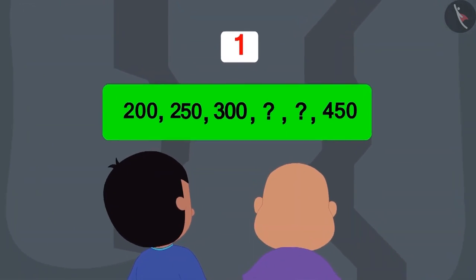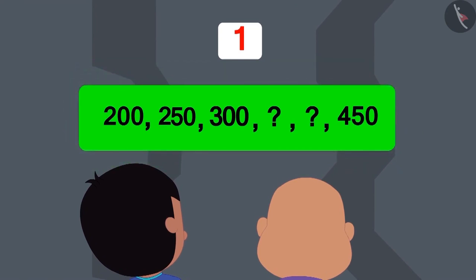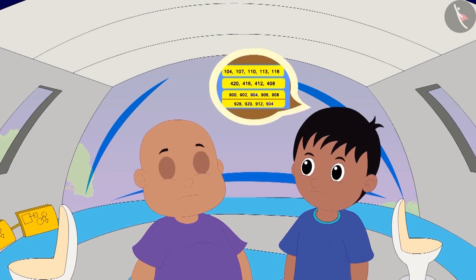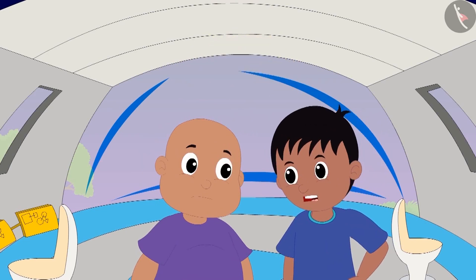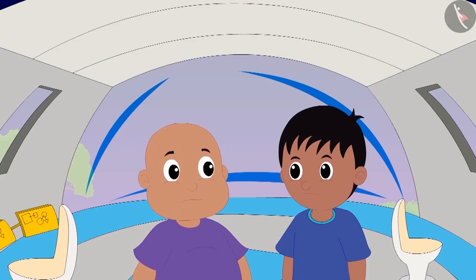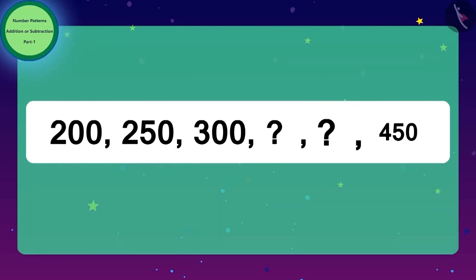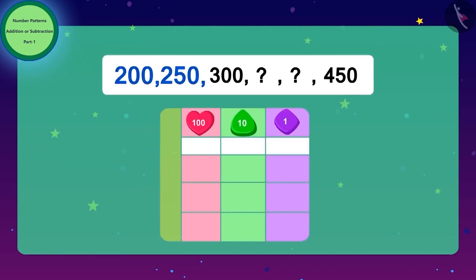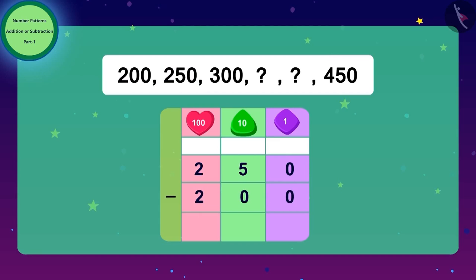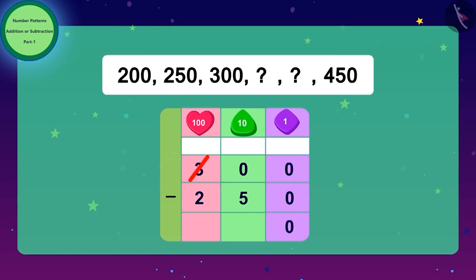Raju and Bablu saw a door in front of them on which the code was written. Raju told Bablu that he had solved Jeev's codes before, but these numbers were very large. Bablu told Raju that they should look at the numbers in order. To find the difference between the first two numbers, they subtract 200 from 250. Then they found the difference between 300 and 250, and again they got 50.